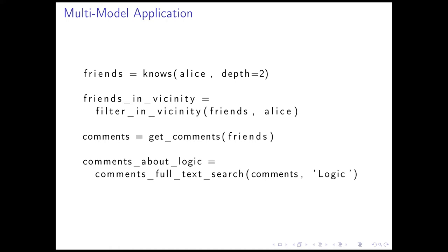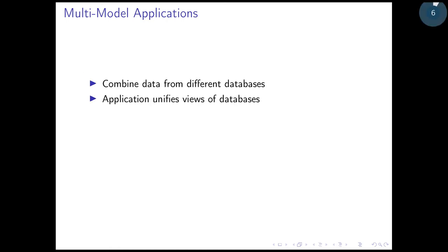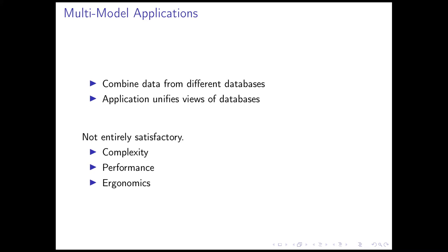What is happening is that the application combines all these different databases and a variety of data at this level. This is not quite satisfactory. There's the complexity — you need to deal with four different databases. The performance is not so good because you iteratively query each database individually. And the ergonomics does not seem so nice. There should be a more unified way to query this data. That is exactly something we're going to try and solve in this talk: a unified approach to a variety of data, or a multi-model database.